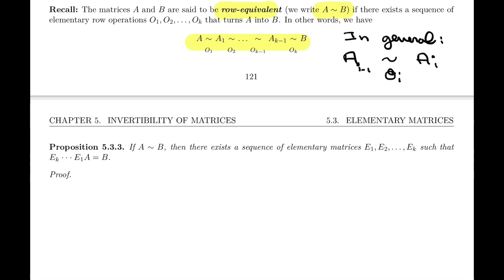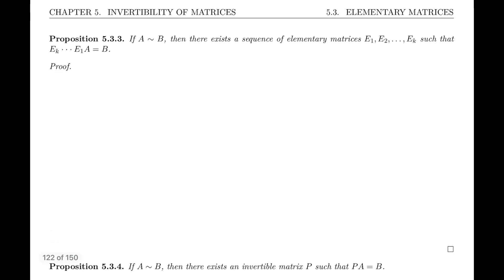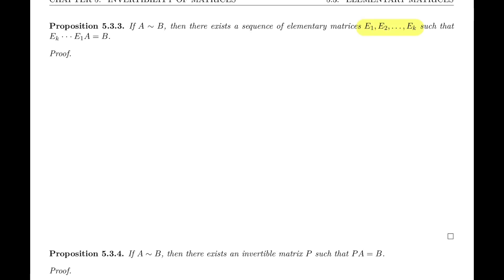Let's read the statements together. Proposition 5.3.3 says: if A is row equivalent to B, then there exists a sequence of elementary matrices E1, E2, all the way to Ek such that Ek times Ek-1 all the way down to E1 times A equals B. Notice the order in which we multiply the elementary matrices is the reverse order in which we listed the operations. There are k operations and k matrices.